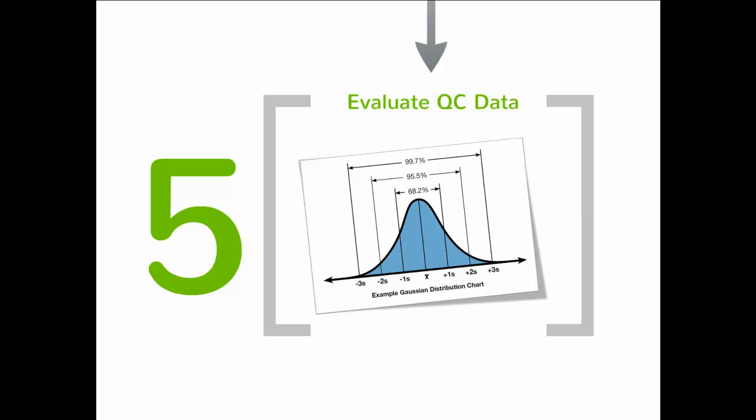QC data greater than 2s but within the 3s limit does not necessarily indicate that the run must be rejected, as approximately 4% of the valid data points will fall between 2s and 3s.